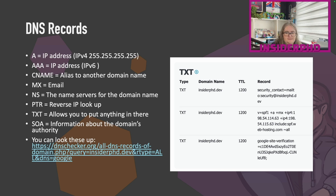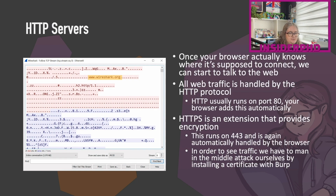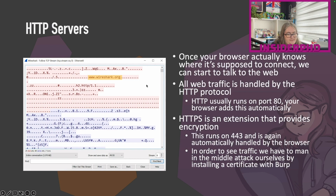Once we know the IP address, we can start talking to the web server. All web traffic is handled by the HTTP protocol. HTTP usually runs on port 80, and HTTPS on port 443 — your browser adds these automatically. You might also see ports 8000 or 8080. With HTTPS there's encryption, so when you spy on HTTPS traffic you can see where it's going but you can't see any other information about what's actually being sent — which is a problem because that's how you hack stuff.